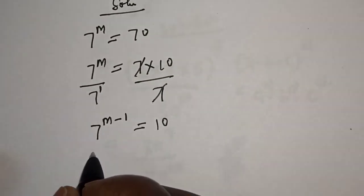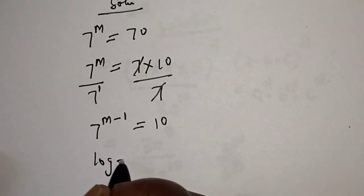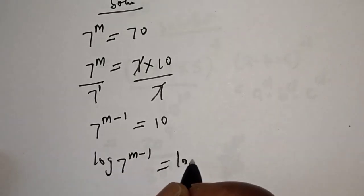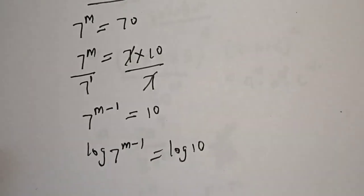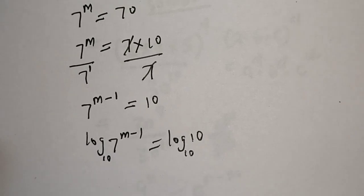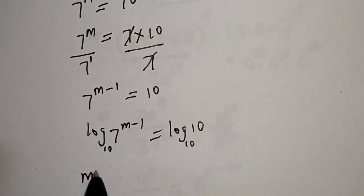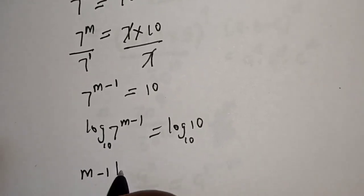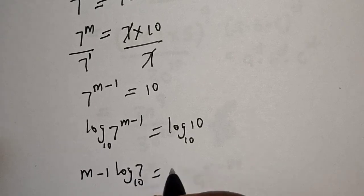Let's take the log of both sides. Log 7 raised to power m minus 1 is equal to log 10. Then let's make everything base 10. This is base 10. We have m minus 1 log 7 base 10 is equal to